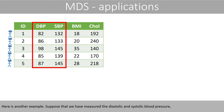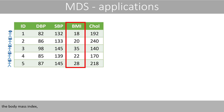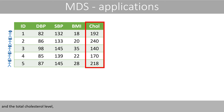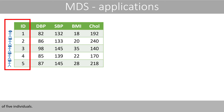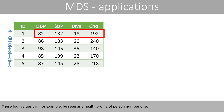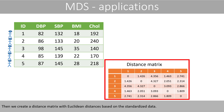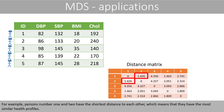Here is another example. Suppose that we have measured the diastolic and systolic blood pressure, the body mass index, and the total cholesterol level of five individuals. These four values can be seen as a health profile of person number one. We then create a distance matrix with Euclidean distances based on the standardized data. For example, persons number one and two have the shortest distance to each other, which means that they have the most similar health profiles.